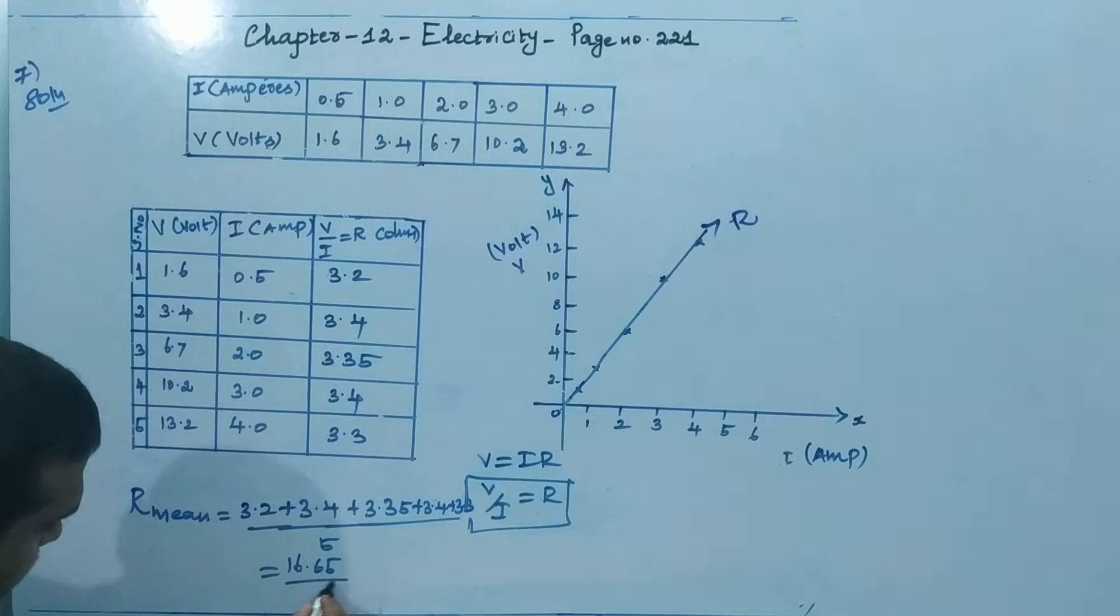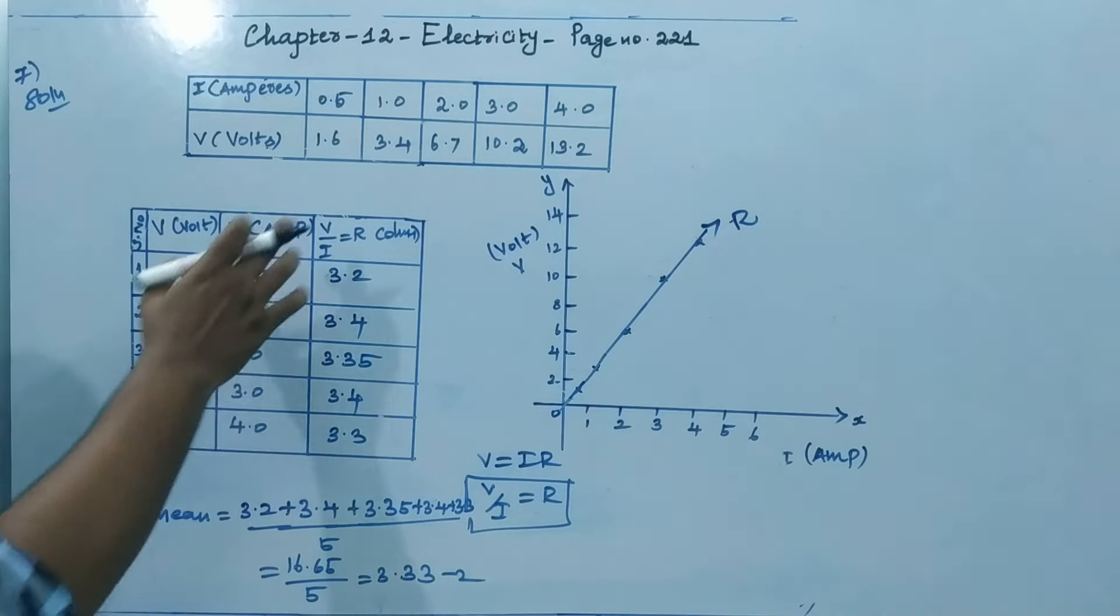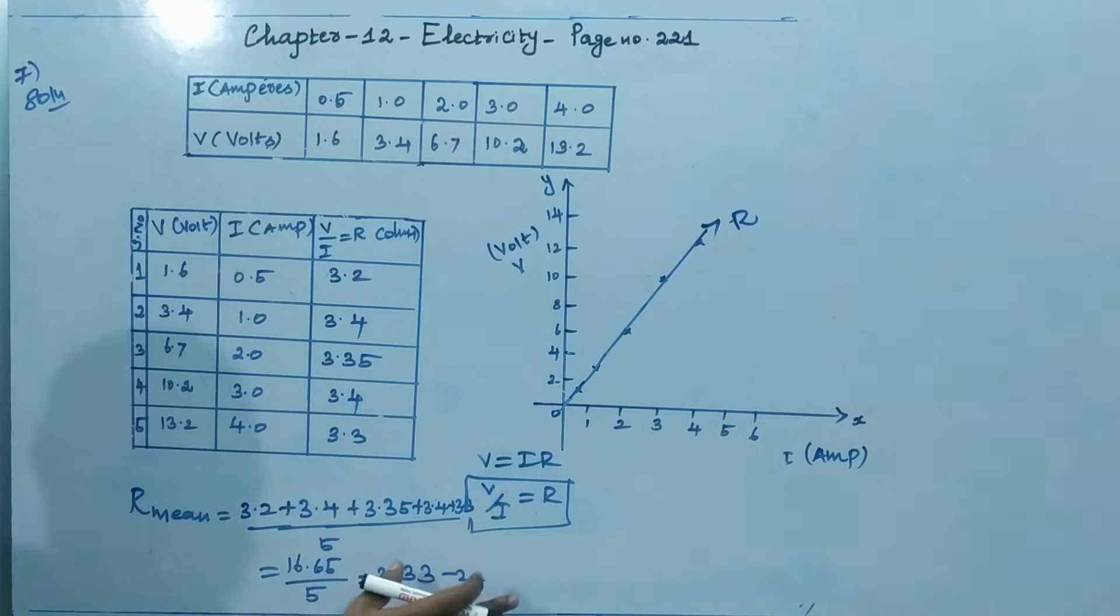16.65 by 5 equals 3.33 Ohm. So that is the answer. So the resistance of your resistor is 3.33 Ohm.